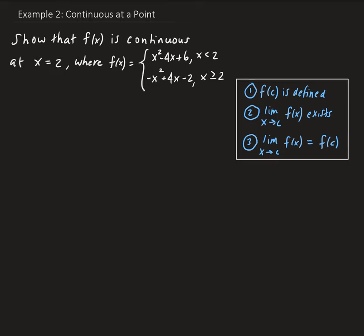and we need to show that the limit of our function as x approaches 2 exists, and that the limit of our function as x approaches 2 is equal to the function evaluated at 2. So let's first look at the limits. Since our function is piecewise, we're going to have to look at the left and right-hand limits.